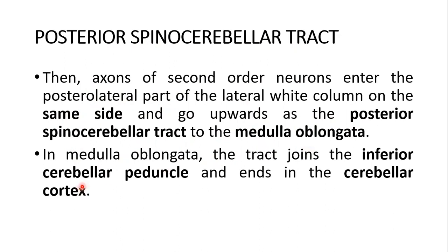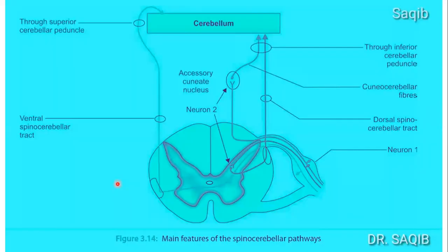The posterior spinocerebellar tract axons remain on the same ipsilateral side and go upwards to the medulla oblongata. In the medulla oblongata, the tract joins the inferior cerebellar peduncle and ends in the cerebellar cortex. Coming back to the picture, you can see how the first, second, and third order neurons travel through this inferior cerebellar peduncle and through the medulla oblongata to reach the cerebellum.